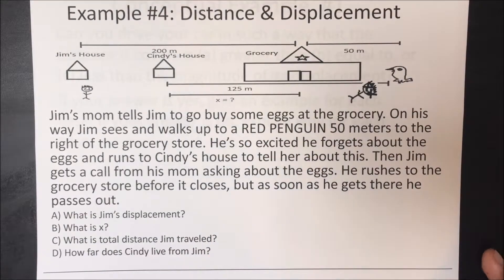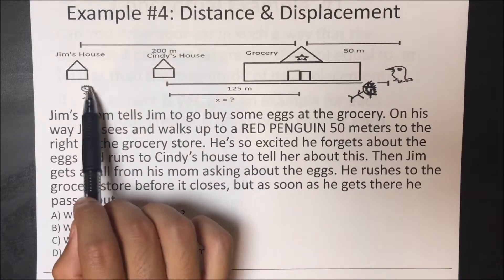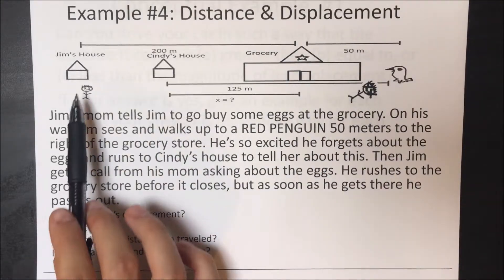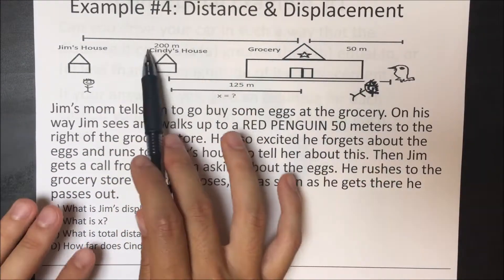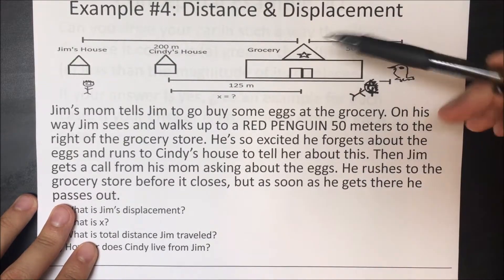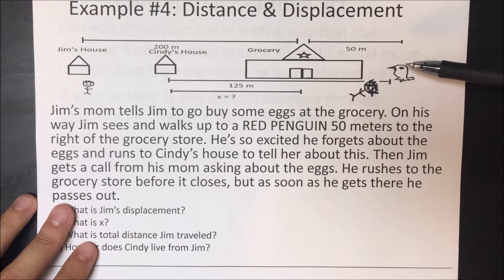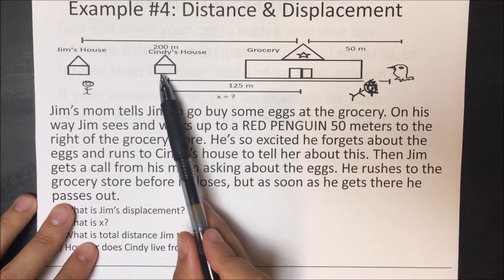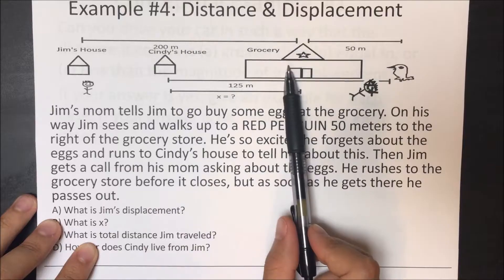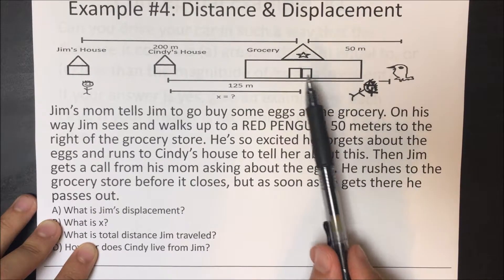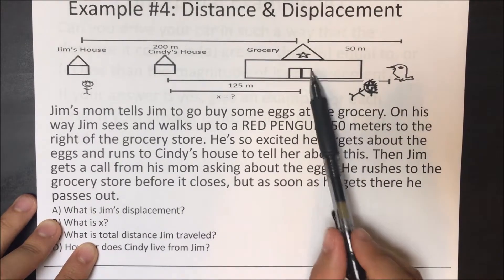Example number 4 — distance and displacement. Jim's mom tells Jim to go buy some eggs at the grocery store, which is 200 meters away. On his way, Jim sees a red penguin 50 meters to the right of the grocery store. He's so excited he forgets about the eggs and runs to Cindy's house to tell her. Then Jim gets a call from his mom asking about the eggs, so he rushes back to the grocery store, but as soon as he gets there, he passes out.